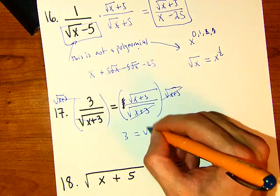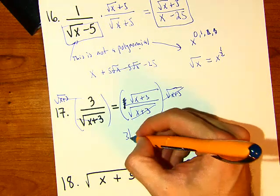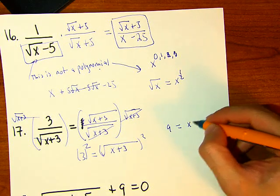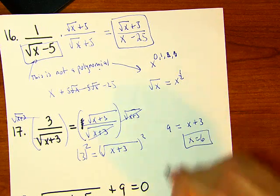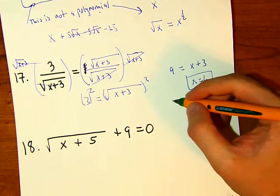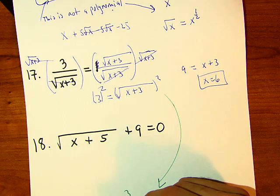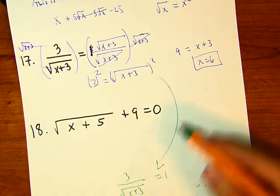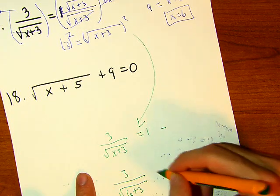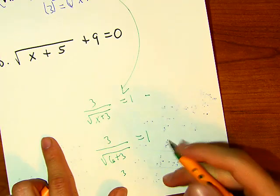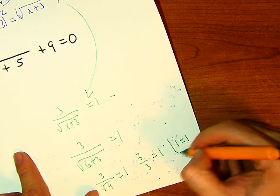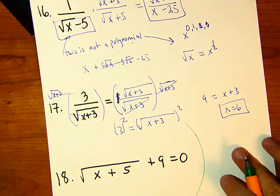After canceling, we get 3 equals square root of x plus 3. Square both sides: 9 equals x plus 3, so x equals 6. Plugging back into the original: 3 over square root of 6 plus 3 equals 3 over square root of 9 equals 3 over 3 equals 1. One equals one — it checks out.